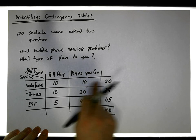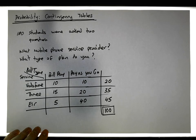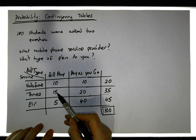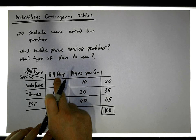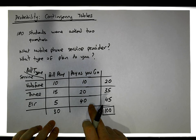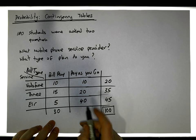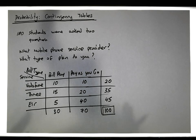The marginal totals tell us how many of these simple categories have occurred. Now for the columns: 10 plus 15 plus 5 gives us 30 students who said they were bill pay customers. Then 10 plus 20 plus 40 gives us 70 students who said they were pay as you go. This is the contingency table we're going to use now for the calculation of probabilities.